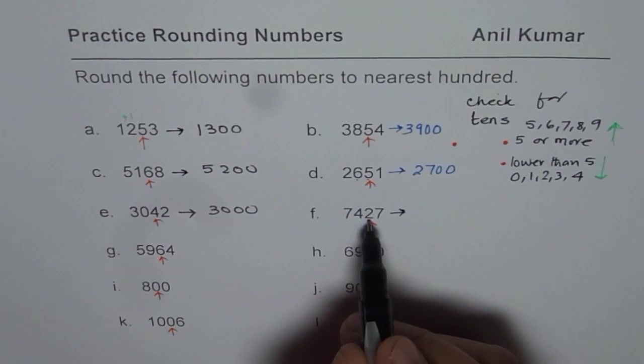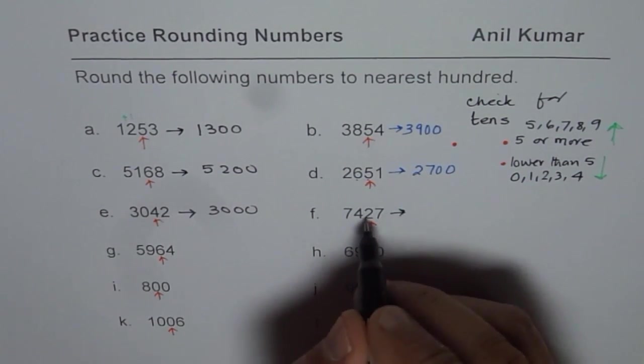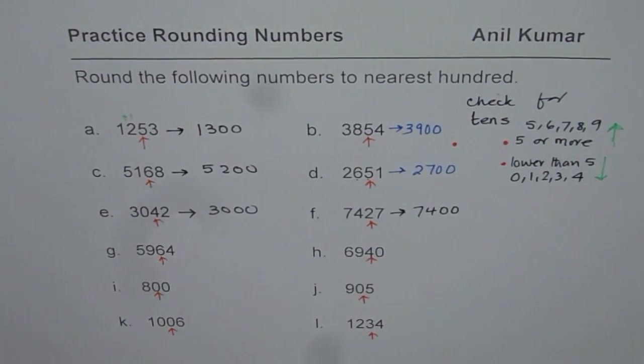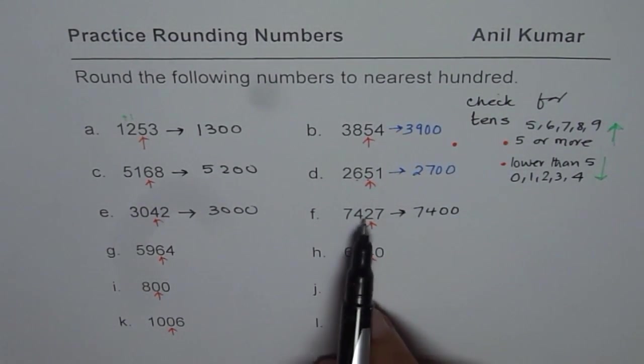2 is again lower than 5. So just change 27 to 00. So we get 7400. That is rounding to 100, lower side.